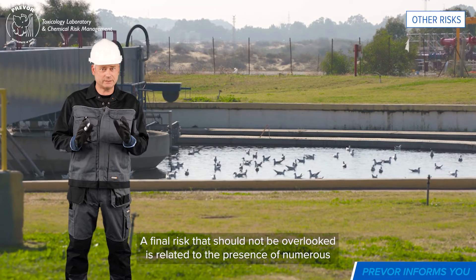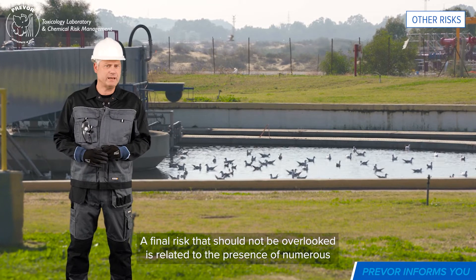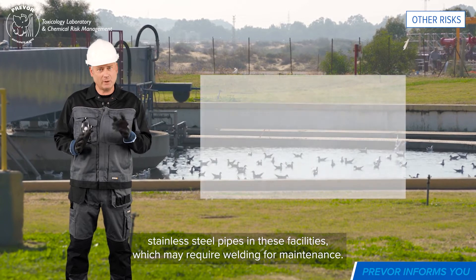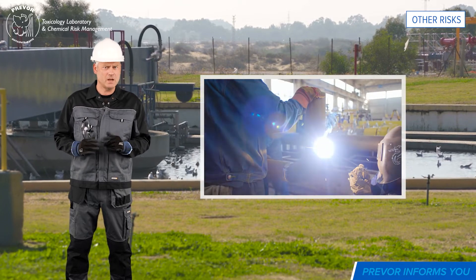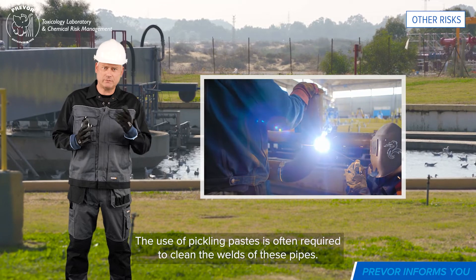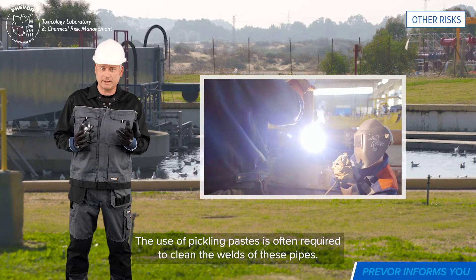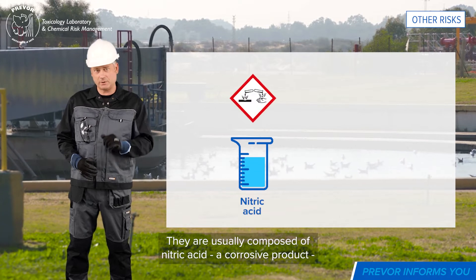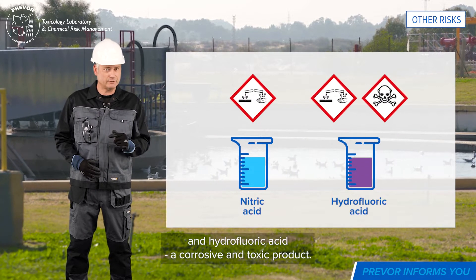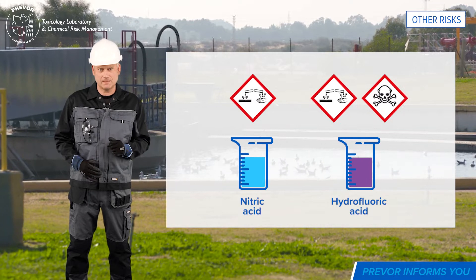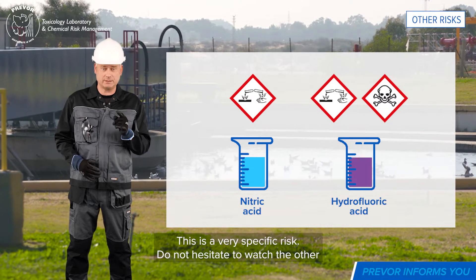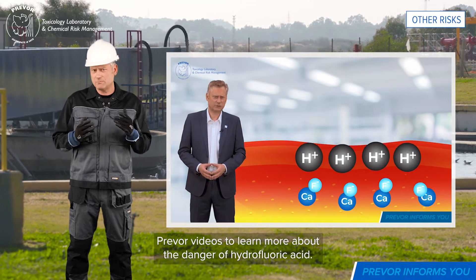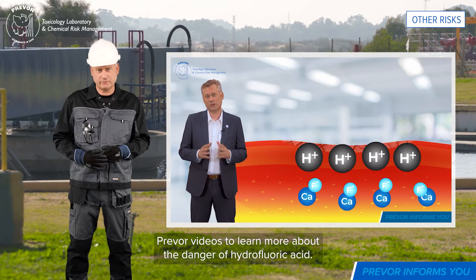A final risk that should not be overlooked is related to the presence of numerous stainless steel pipes in these facilities, which may require welding for maintenance. The use of pickling pastes is often required to clean the welds of these pipes. They are usually composed of nitric acid, a corrosive product, and hydrofluoric acid, a corrosive and toxic product. This is a very specific risk. Do not hesitate to watch the other PREVOR videos to learn more about the danger of hydrofluoric acid.